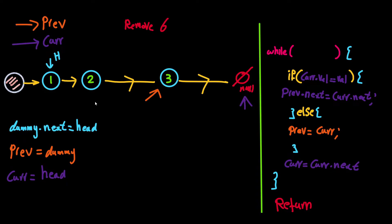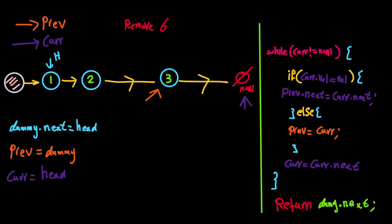We've successfully removed all instances of 6 from the linked list. Now for the while loop condition: we keep looping while current does not equal null. Once current is null, we break from the loop. We need to return the new head — and since the dummy node always points to the head of the linked list, we return dummy.next, which will always be the head.